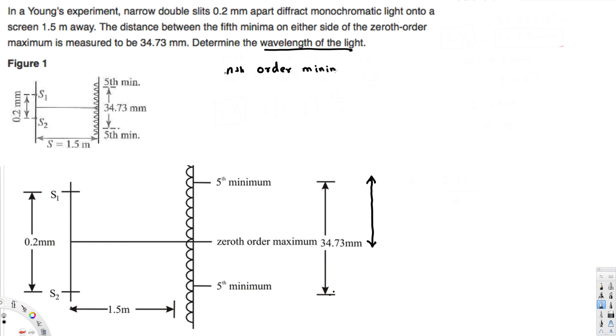We can derive a general expression that's going to look like this: yn equals (n minus 1/2) times lambda L over a. So this is the general expression for nth order minimum from the zeroth order maximum to nth order minimum.